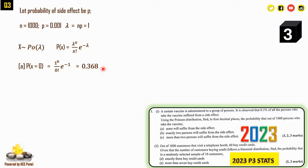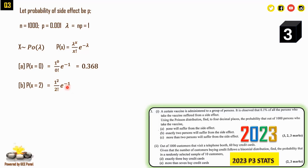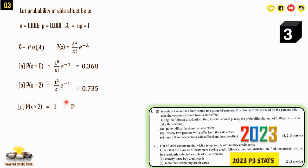P(X = 0) = e^(−1) × 1^0 / 0! = 0.3679 (to 4 d.p.). For exactly two: P(X = 2) = e^(−1) × 1^2 / 2! = 0.1839 (to 4 d.p.). Note: always give answers to the required decimal places to avoid losing marks.